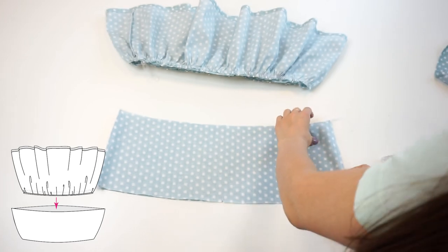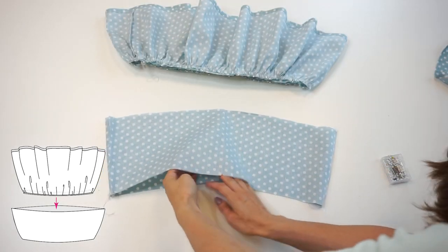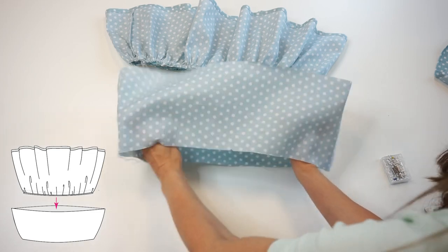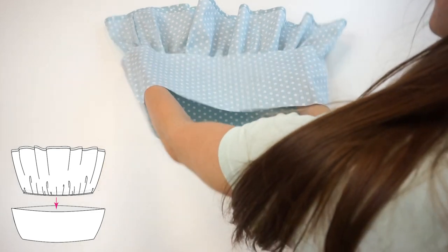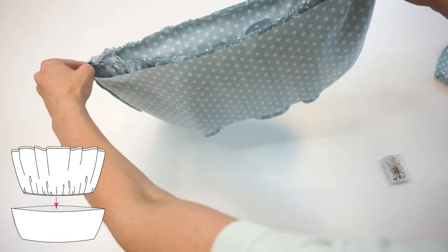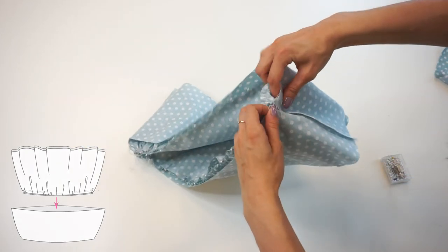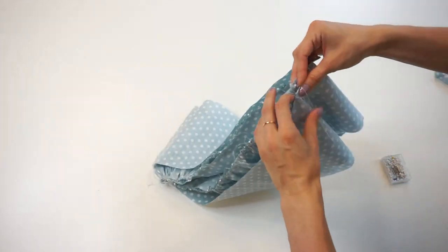Now take the second skirt panel and join its upper edge with the gathered edge. The right side of the second skirt panel is facing the wrong side of the gathered panel. Now pin around by matching the side seams and the notches at the middle.